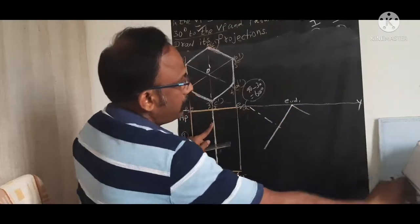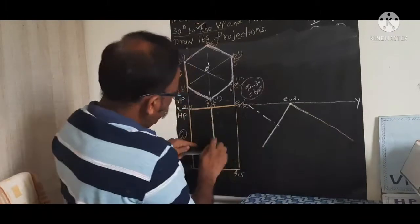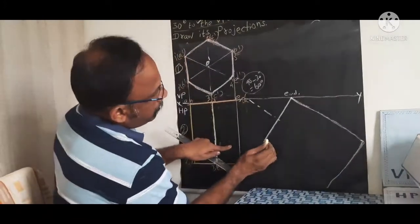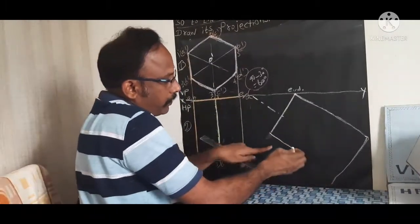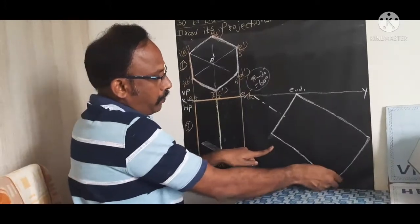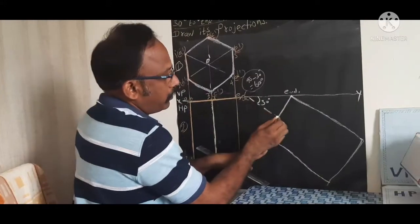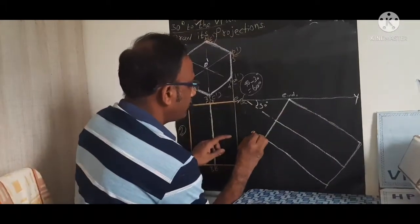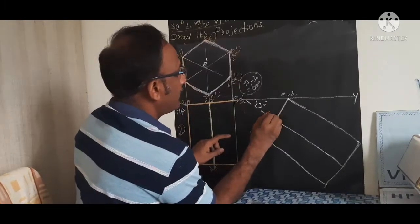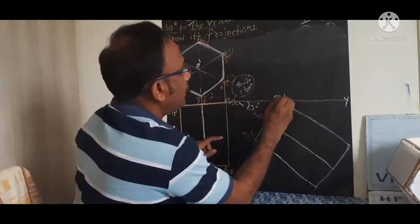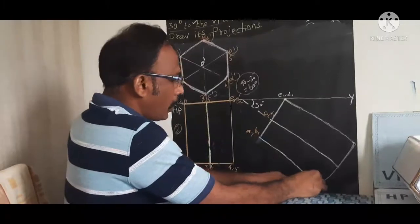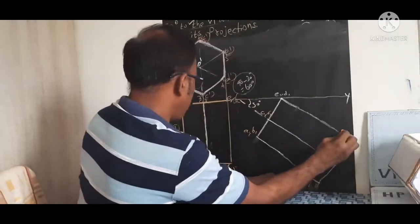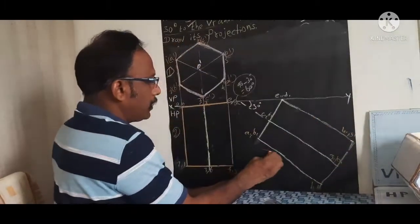Complete the tilted top view by taking the same measurements from the tilted front view. Mark the base hexagon points: A1, B1, C1, D1, E1, F1, and the front face points: 1-1, 2-1, 3-1, 6-1, 4-1, 5-1. Step number 3 is now complete.